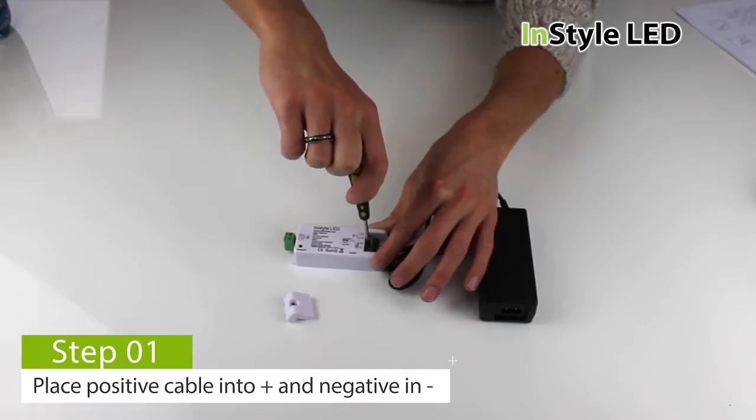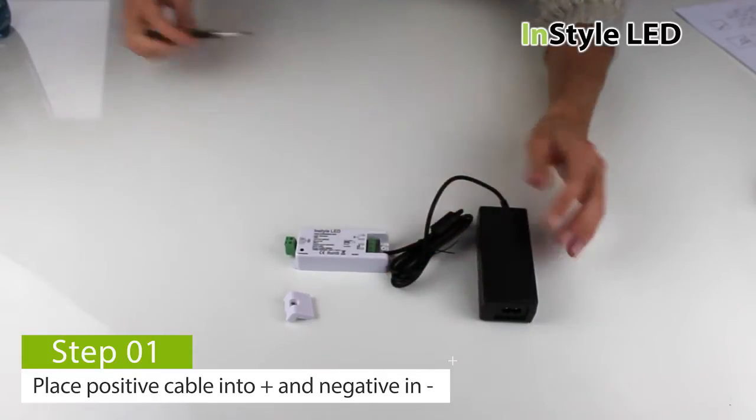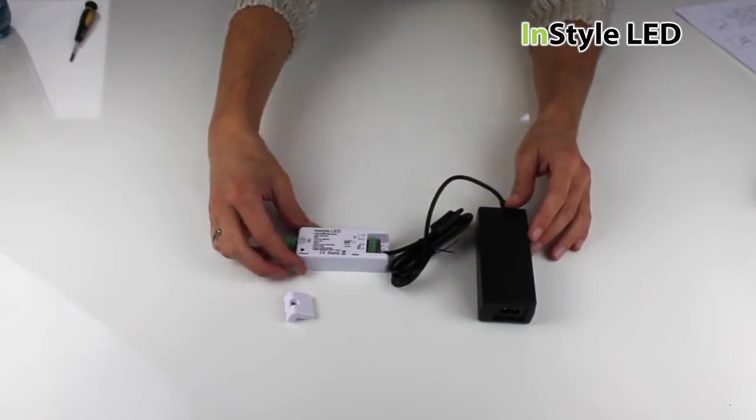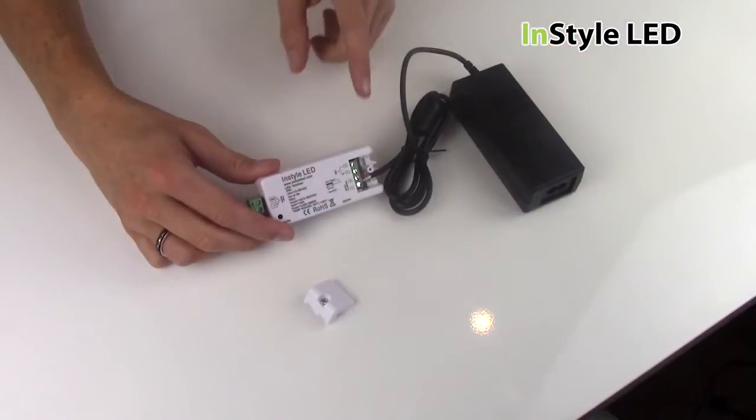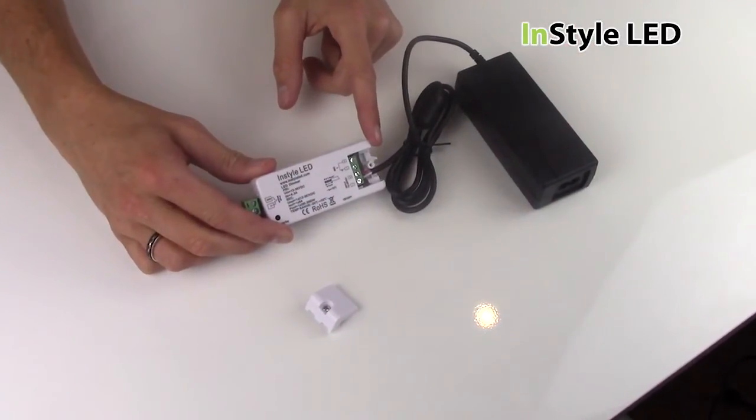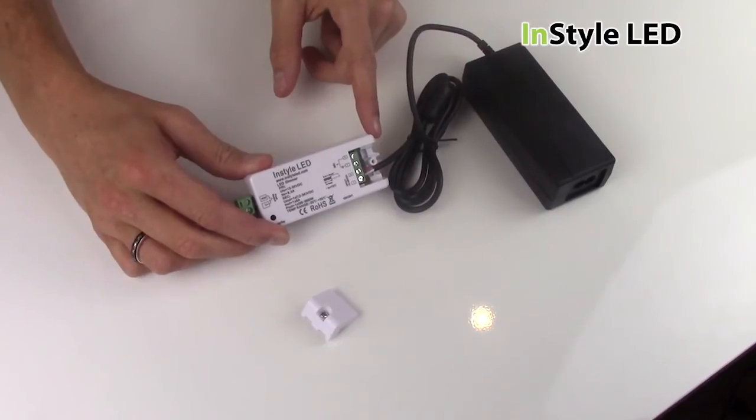Firstly take your transformer and wire the positive into the input plus and the negative cable into the input minus. The positive cables will either be red or brown and the negative cables can either be blue, black or white.